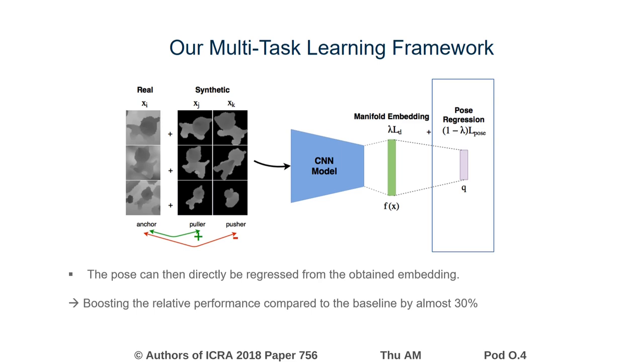As a result, we have found a relative improvement of almost 30% using our multi-task learning framework compared to direct pose regression by itself.